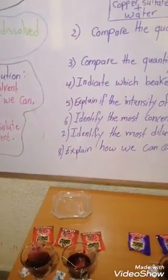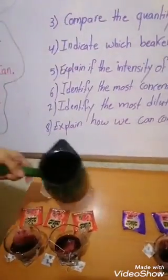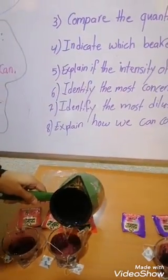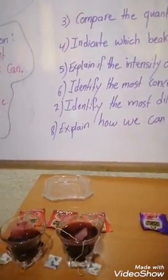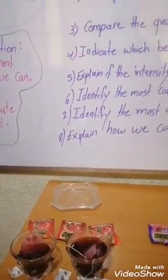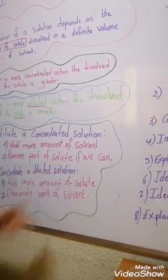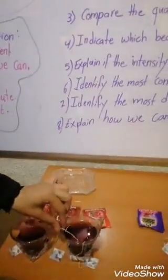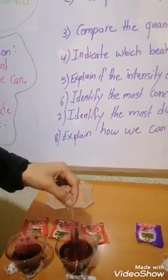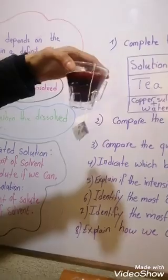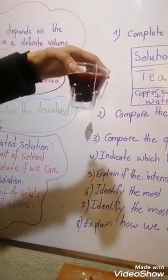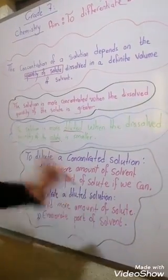We add more solvent, which is water, to make it less concentrated. We can also remove part of the solute — for example, remove one tea bag — and in this case the solution becomes diluted.